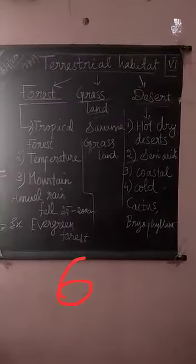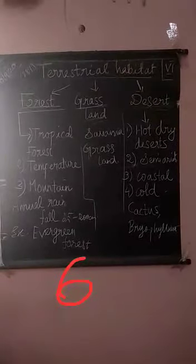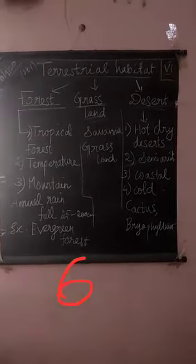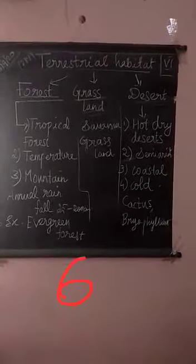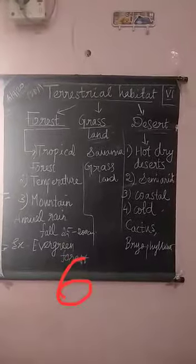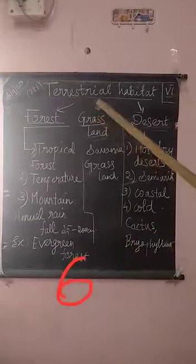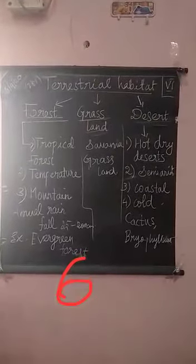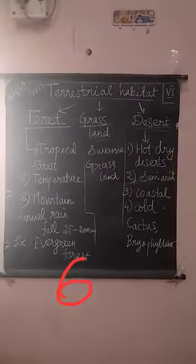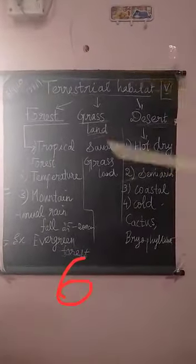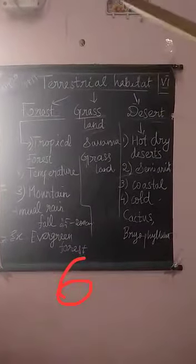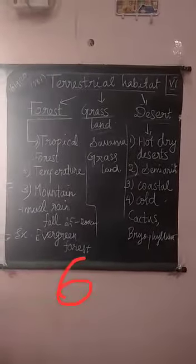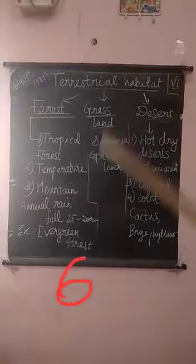The classification of terrestrial habitat is: forest, then grassland, and then desert. The first one is forest. Forest means a large area dominated by trees — it has a large amount of trees.